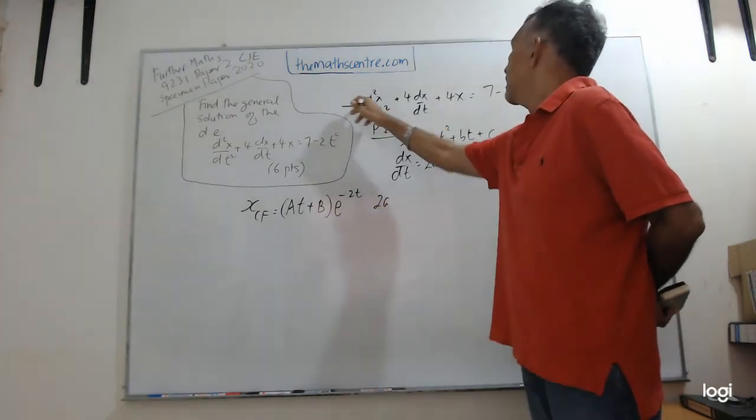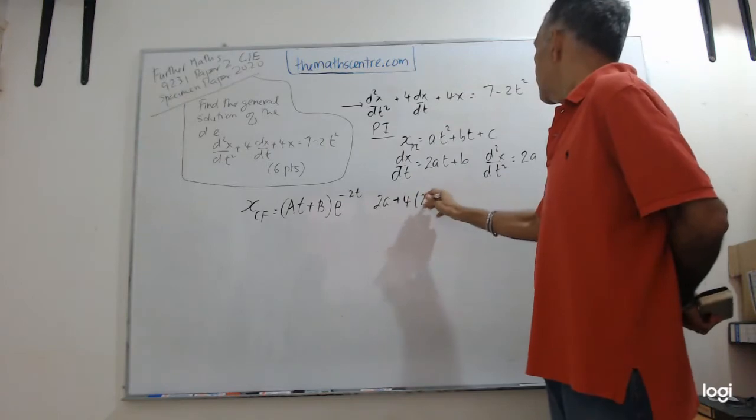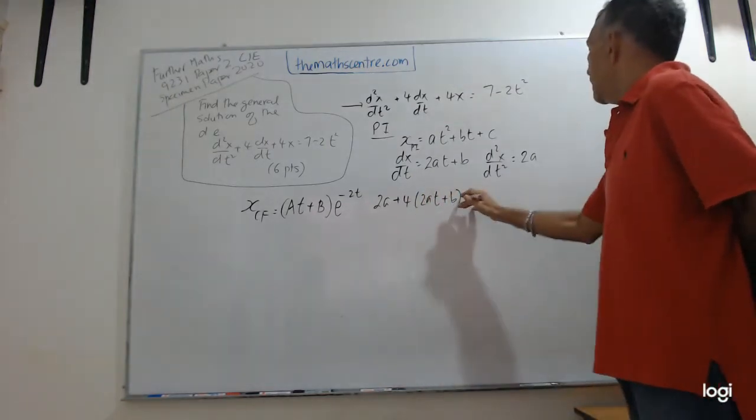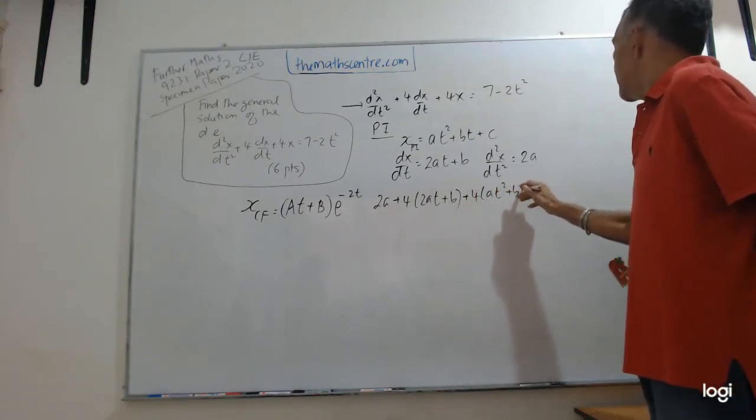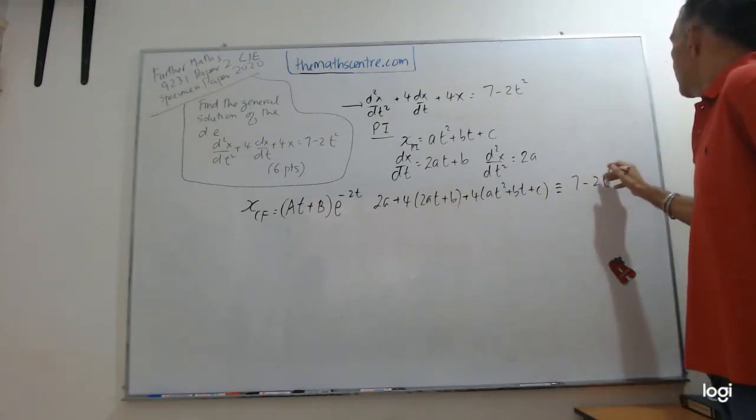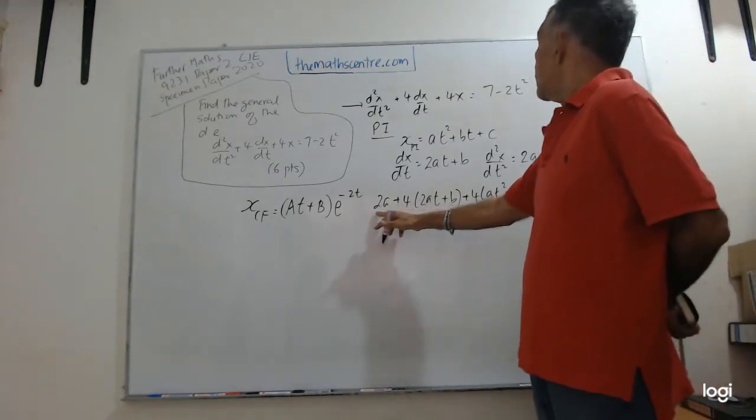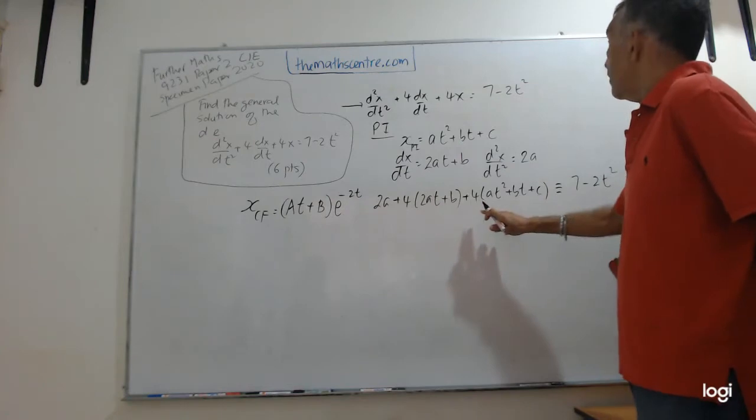Now let's go ahead and plug in: 2a + 4(dx/dt) which is 4(2at + b) + 4x which is 4(at² + bt + c), and that will be identical to 7 - 2t².